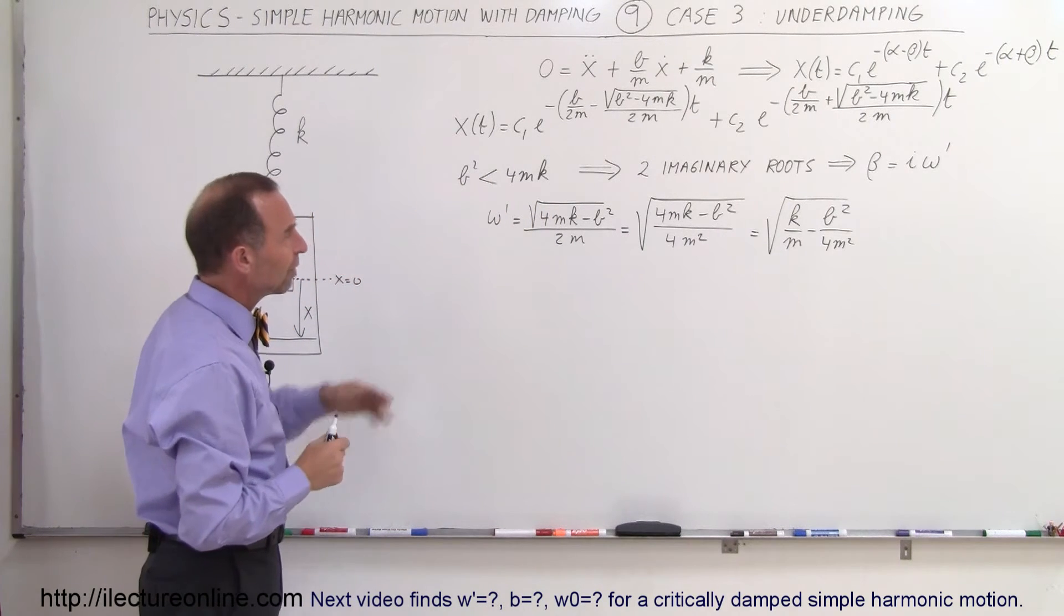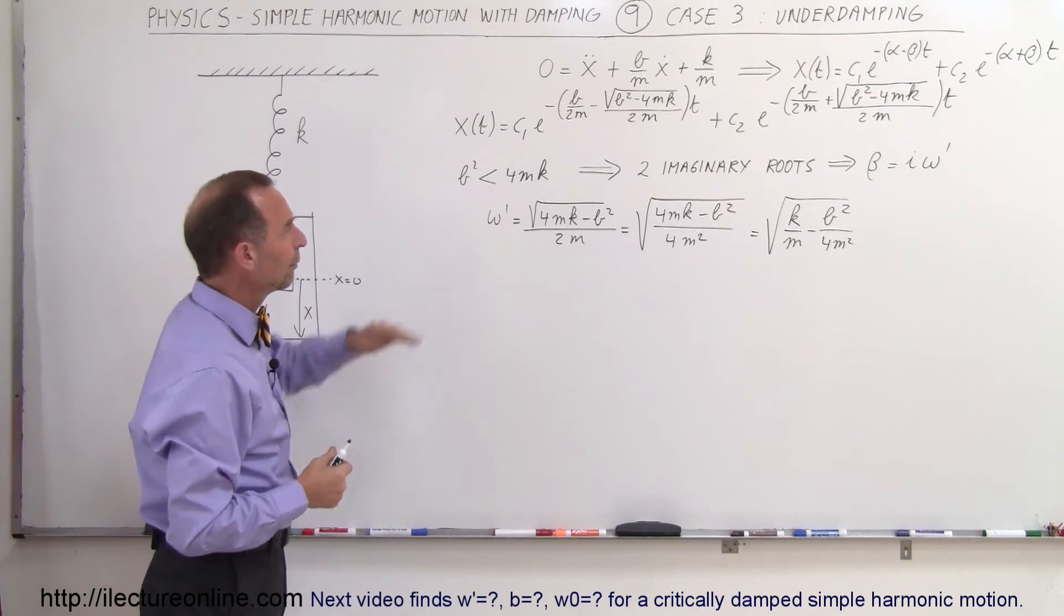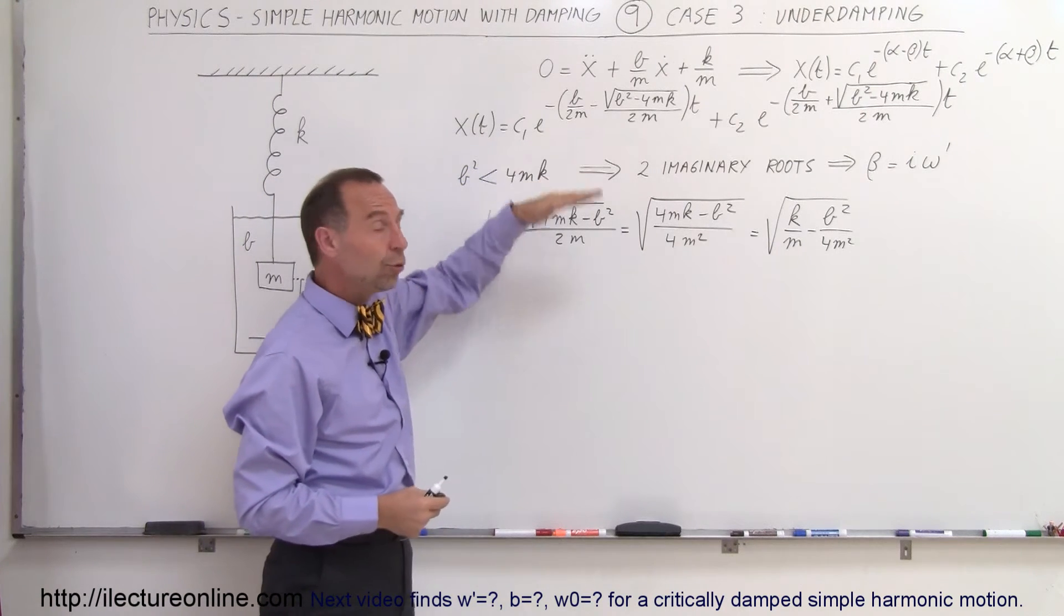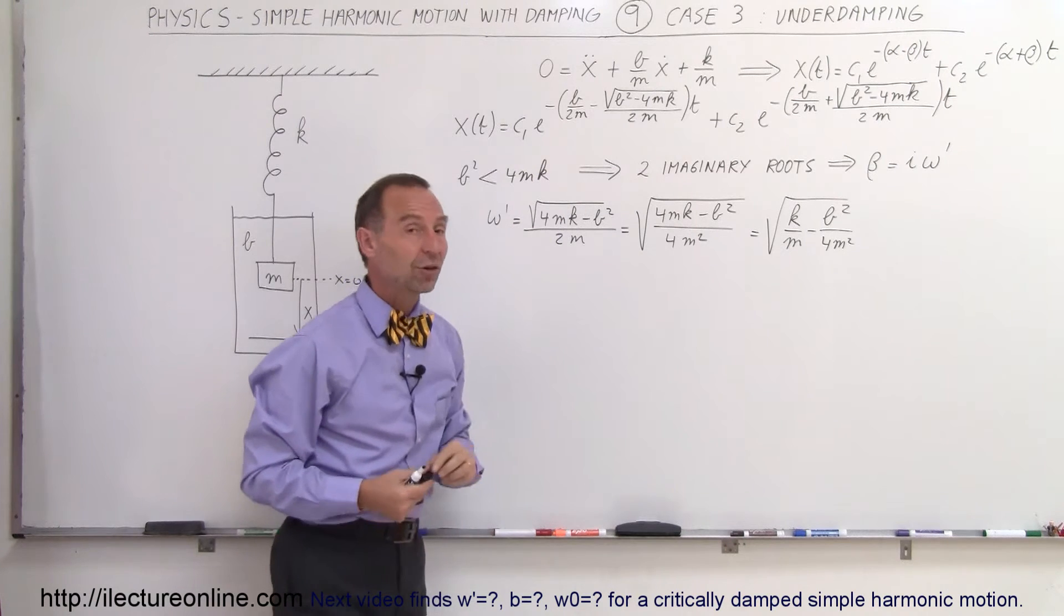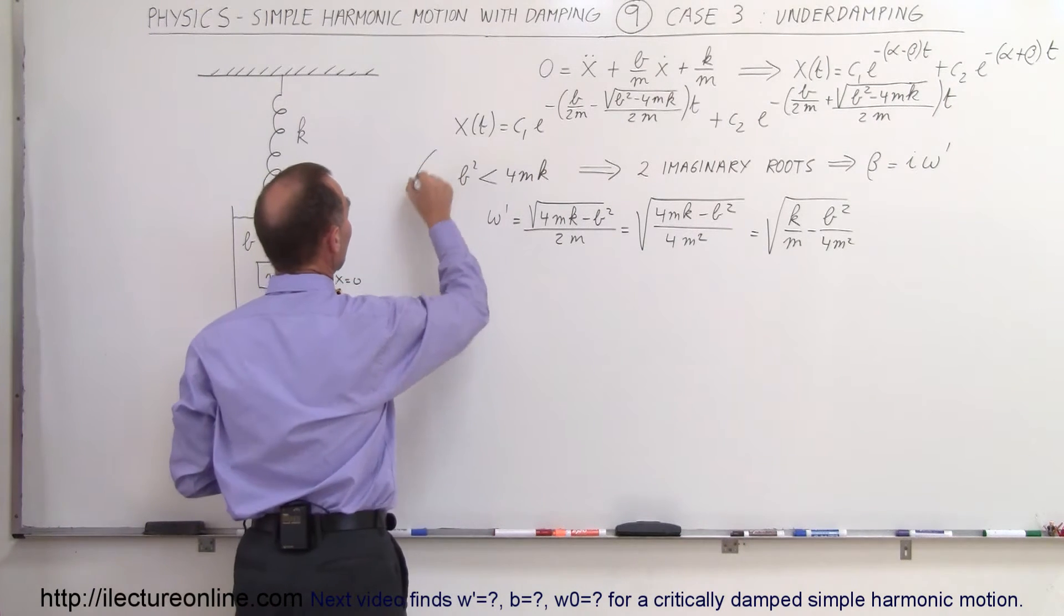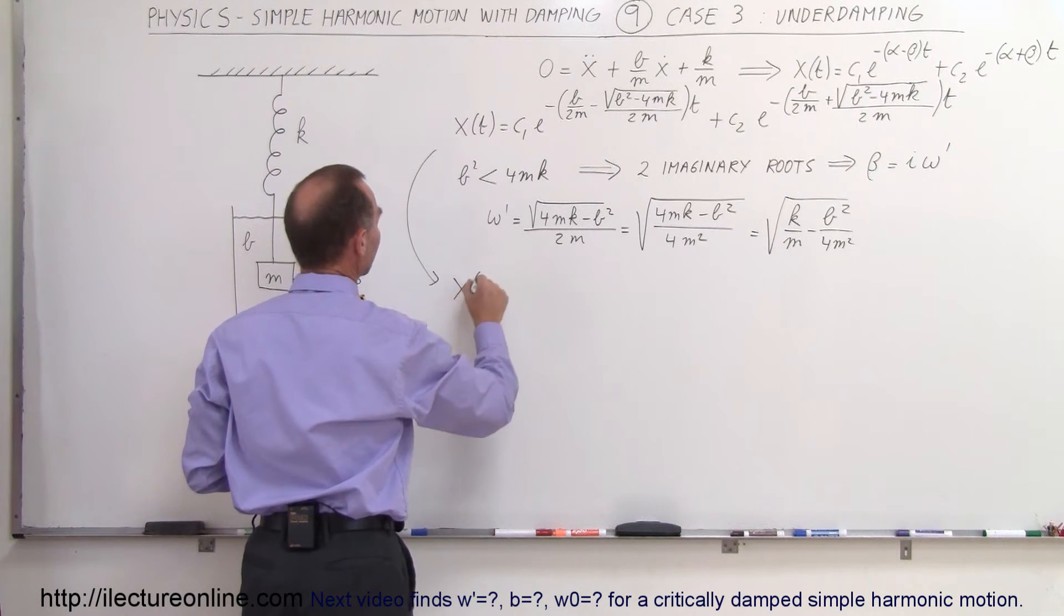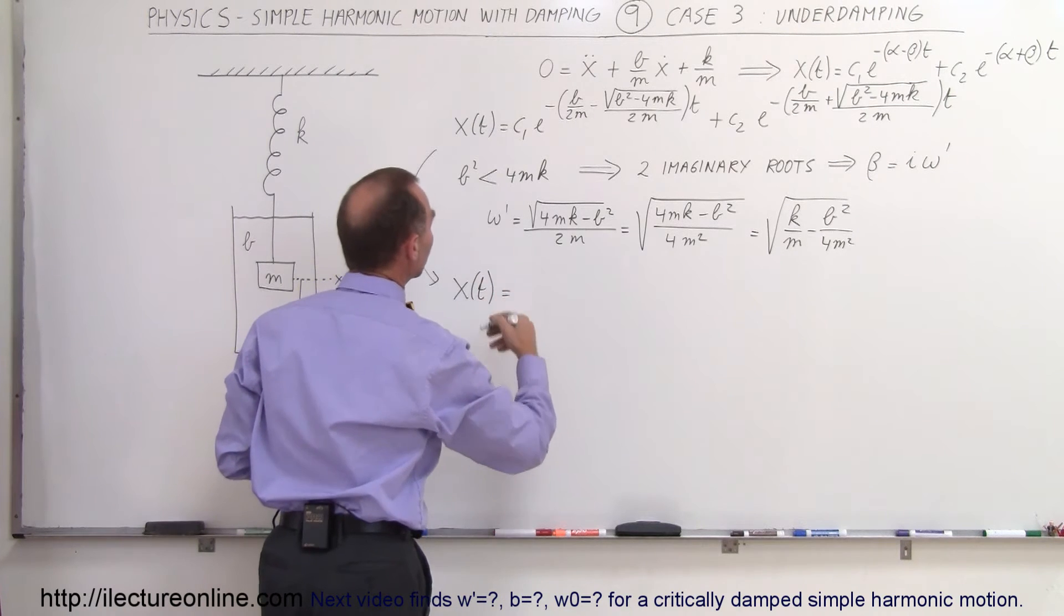So what does the general equation now look like when we reduce this into the new form, keeping in mind that now this will be an imaginary number? So what that becomes then, this equation now becomes x as a function of time is equal to some amplitude, let's call it A,